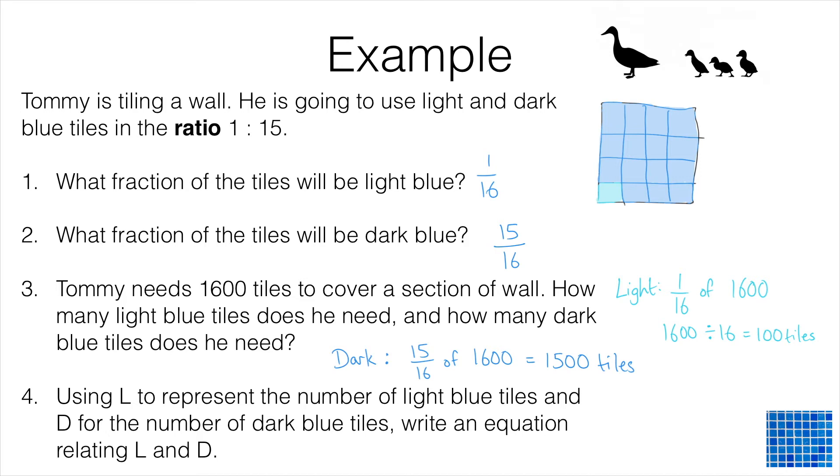In question 4 it says using L to represent the number of light blue tiles and D for the number of dark blue tiles, write an equation relating L and D. To do this question what we have to do is spot that no matter how many tiles we're dealing with, we should end up with 15 times as many dark tiles as light tiles.